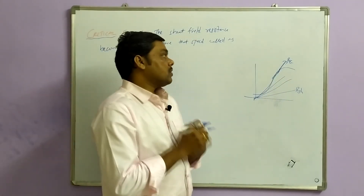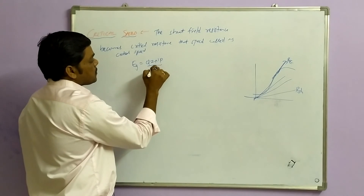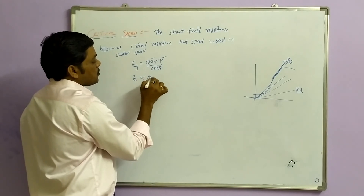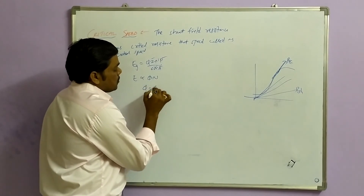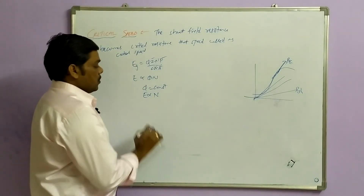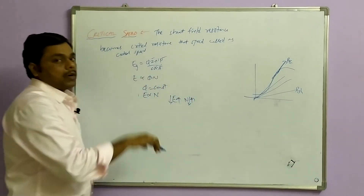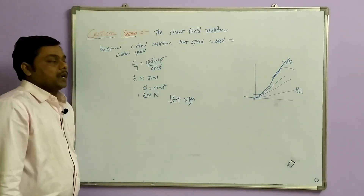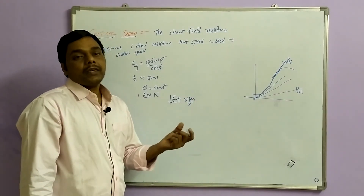We know from the generated EMF formula: EG = φZNP divided by 60A. Since Z, P, 60, and A are constant, EG is proportional to φ × N. If E increases, N also increases; if E decreases, N also decreases. By using this relation, we can determine the critical speed of a DC generator.